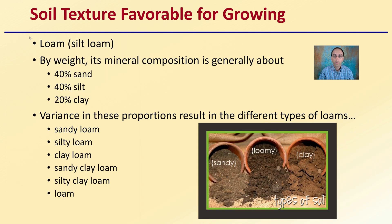The soil texture most favorable for growing is a loam or silty loam — by weight, that's about 40% sand, 40% silt, and 20% clay. Variations in these proportions result in different types of loam: sandy loam, silty loam, clay loam, sandy clay loam, silty clay loam, and plain loam. All of these, in general, would be considered at least initially favorable for growing plants.